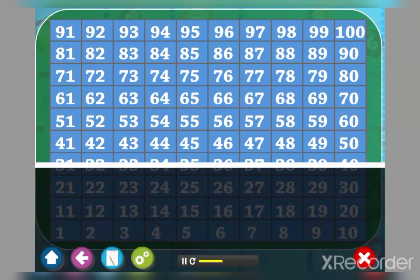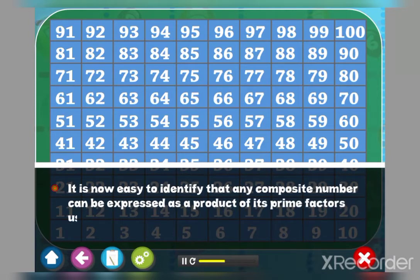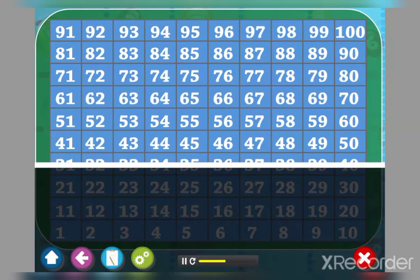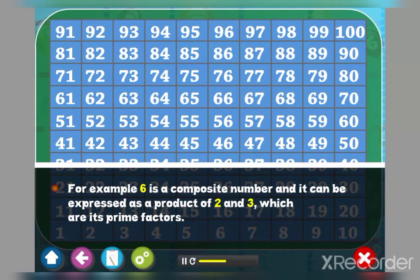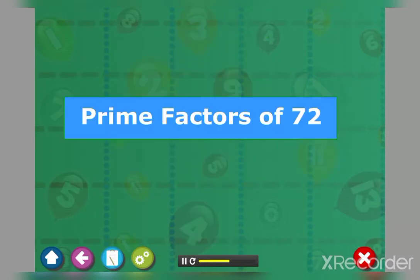Children, it is now easy to identify that any composite number can be expressed as a product of its prime factors using prime factorization. For example, six is a composite number and it can be expressed as a product of two and three which are its prime factors. Come, let us build a tree to find prime factors of 72.